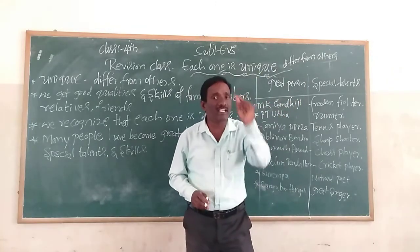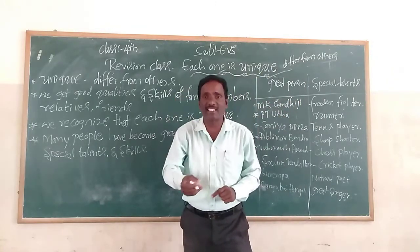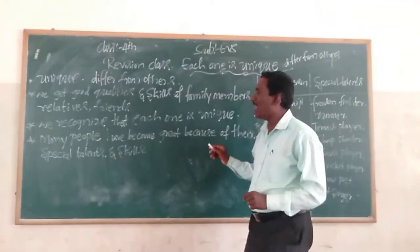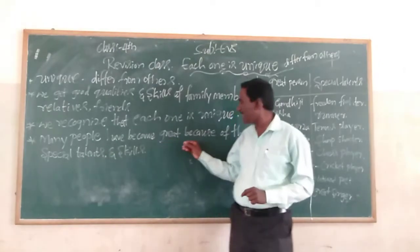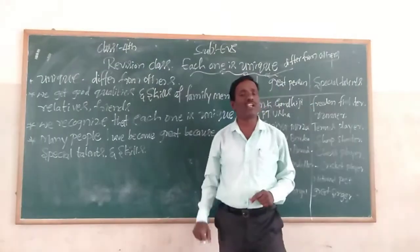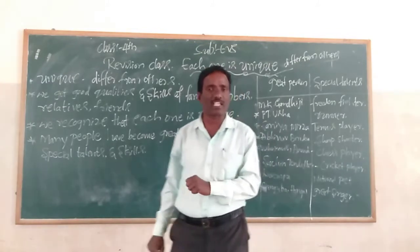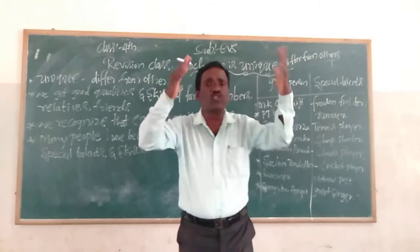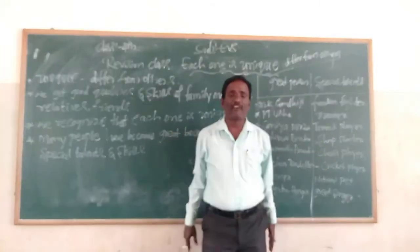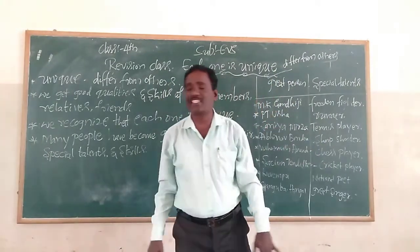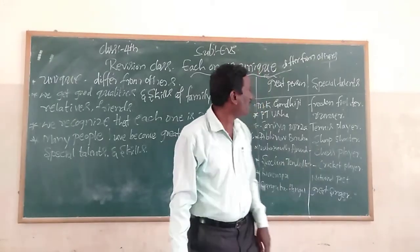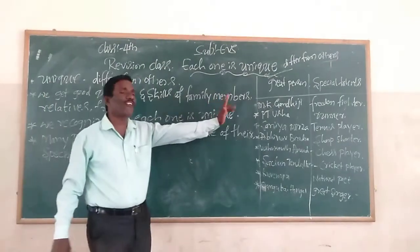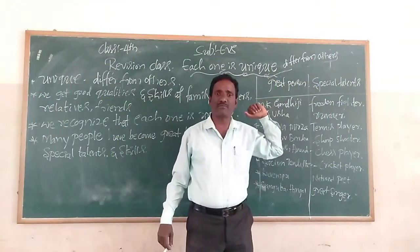Some activities, some skills, some talents make a person unique. Many people have become great because of their special talents and skills in our society. So many people have great achievements for their skills and special talents in our surroundings. For example, we look at great persons and their special talents.